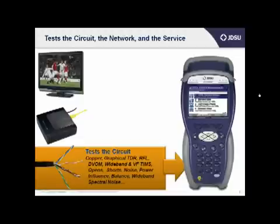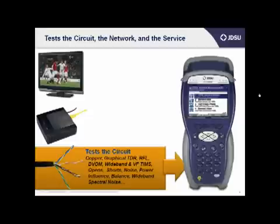Also available, you'll find a graphical TDR, or time domain reflectometer, and a resistive fault locator, or RFL meter, to pinpoint and repair troubles prior to installing the circuit. Rounding out the copper feature set is JDSU's own Copper Expert — a one-button automated test that runs a series of copper tests and then provides an indication of what the copper trouble is.